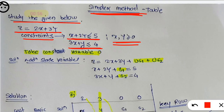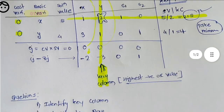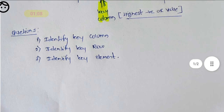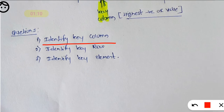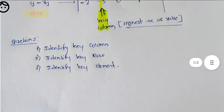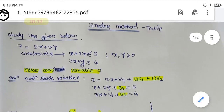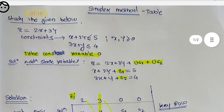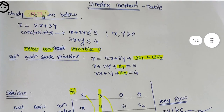Now, solution part — we will see how we should solve such problems using the simplex method. The question can ask you to identify the key column, the key row, or the key element. To solve this, you first have to understand the full method, then you can proceed with the solution.